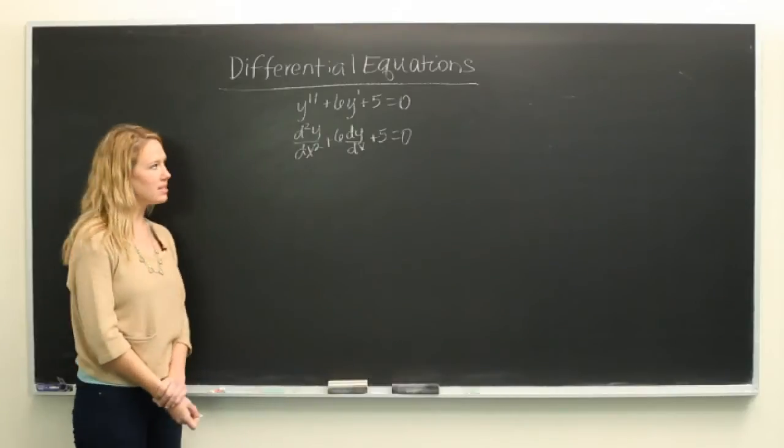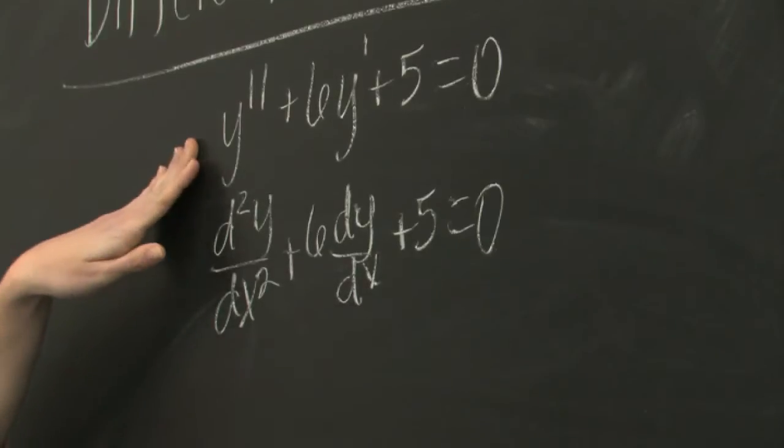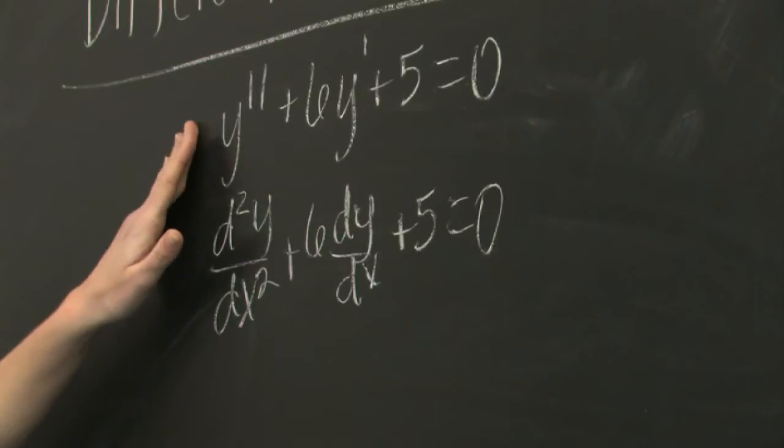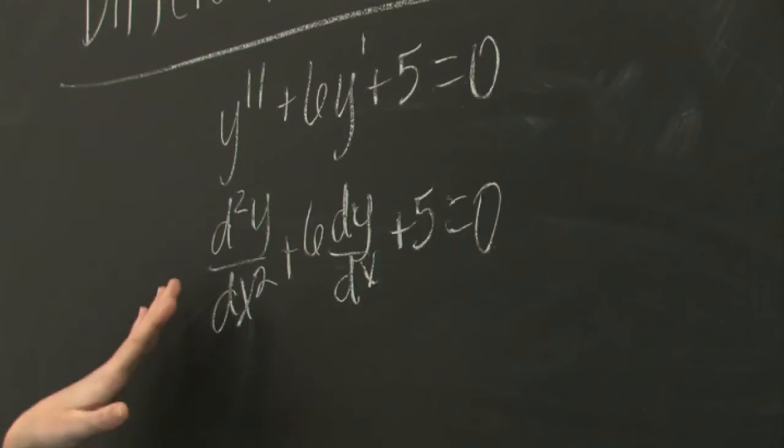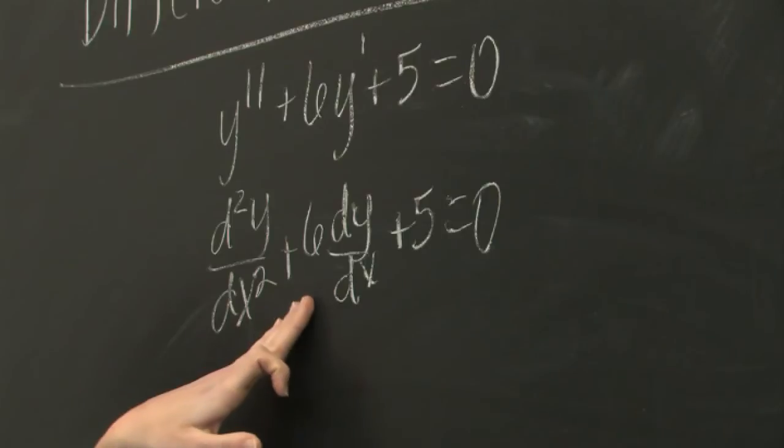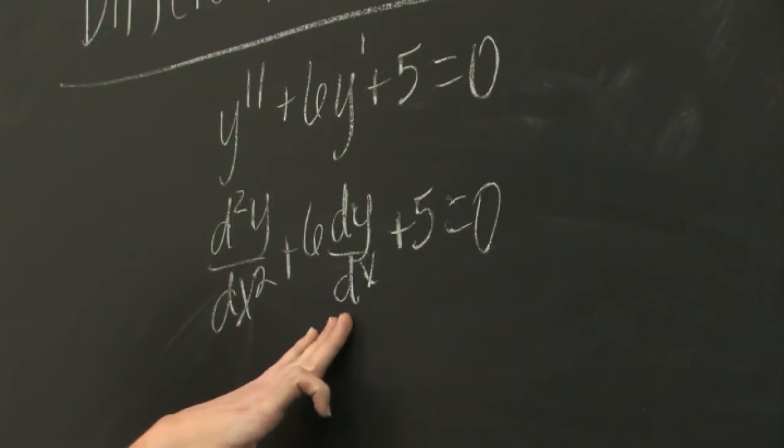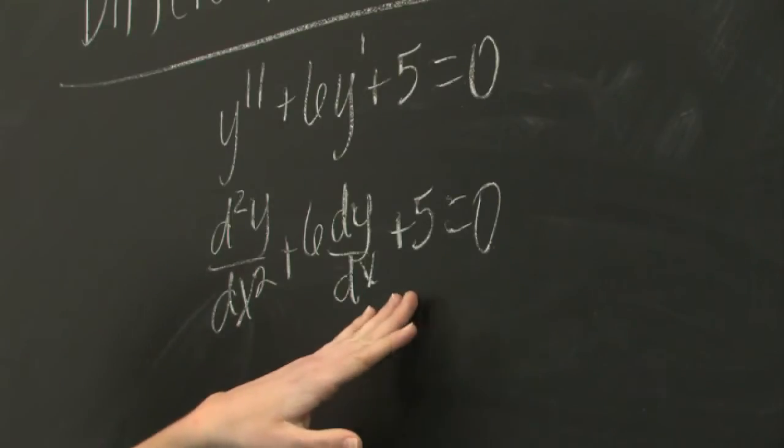So starting with the basics, we have a differential equation written on the board: y double prime plus 6y prime plus 5 equals 0. This can also be rewritten as the second differential of y plus 6 times the derivative of y plus 5 is equal to 0.